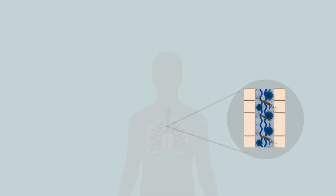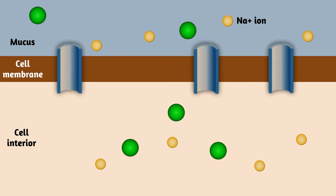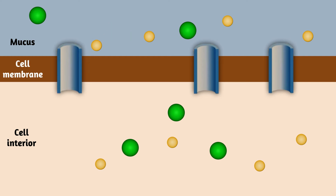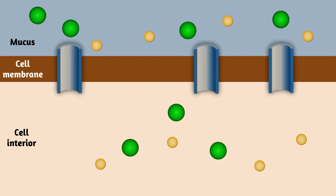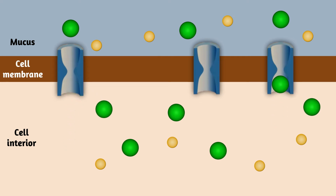Now let us have a look at the airway cells. The airway cells contain an ion channel called cystic fibrosis transmembrane conductance regulator, CFTR. Normally, this is responsible for the movement of chloride ions out of the cells into the mucus. However, in case of mutated CFTR, the chloride ions are unable to move outside the cell, hence the concentration of chloride ions inside the cell increases.